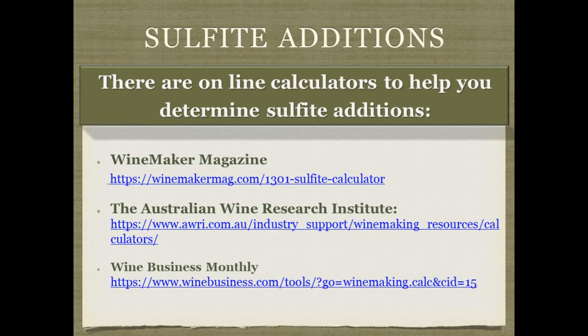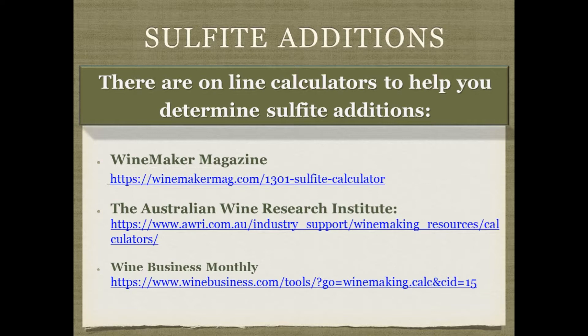Here are some calculators I find very useful — I'd rather not do the math by hand. Wine Maker Magazine is one option. The Australian Wine Research Institute has quite a few calculators and is very helpful. Wine Business Monthly also has calculators available.